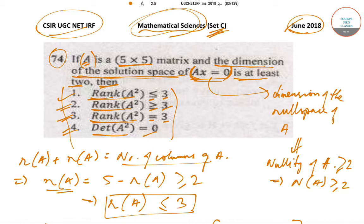A is a 5×5 matrix and the dimension of the solution space of Ax = 0 is at least 2. The dimension of the solution space of Ax = 0 is nothing but the dimension of the null space of A, which is the nullity of the matrix A.